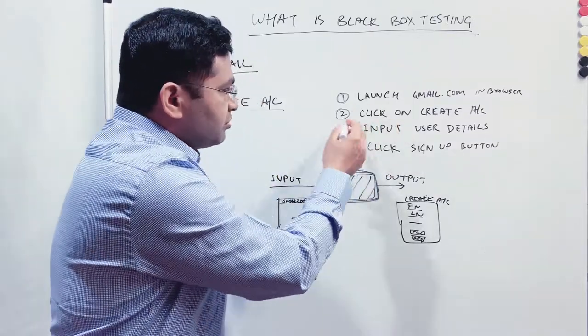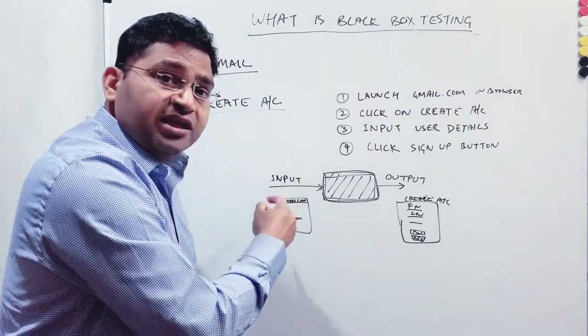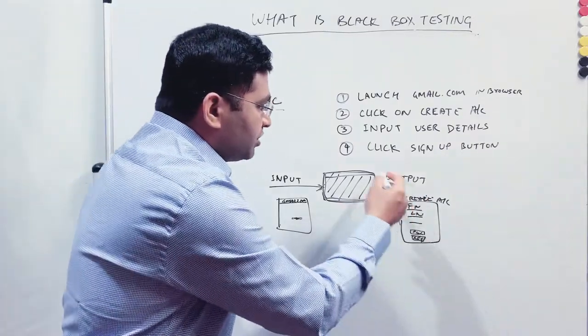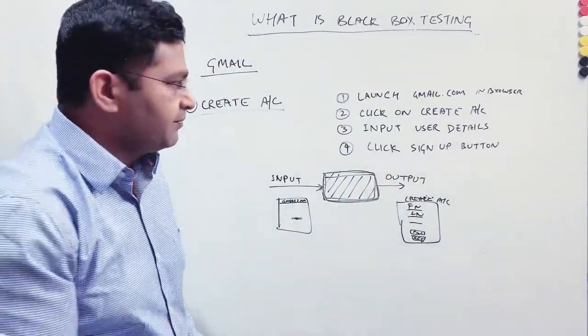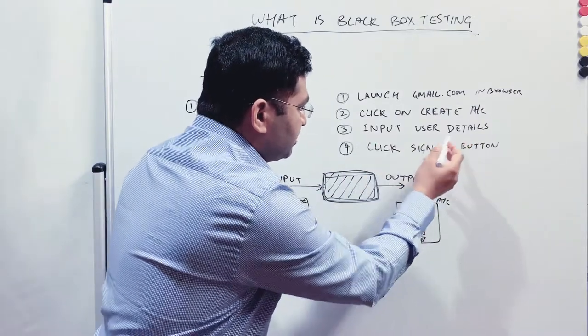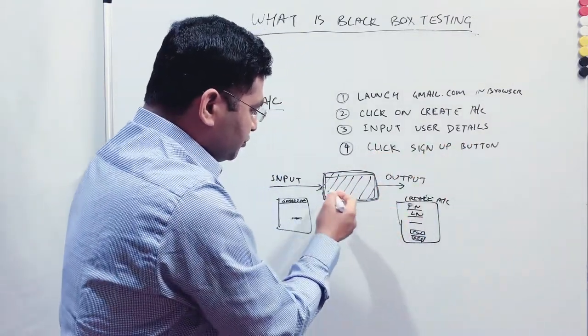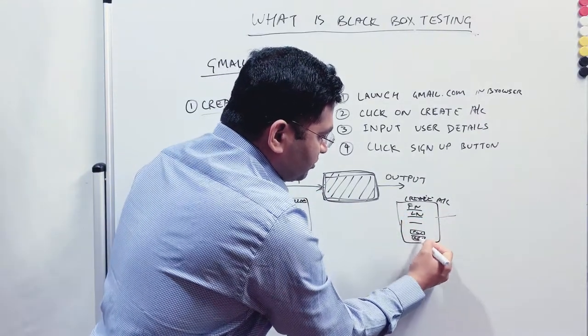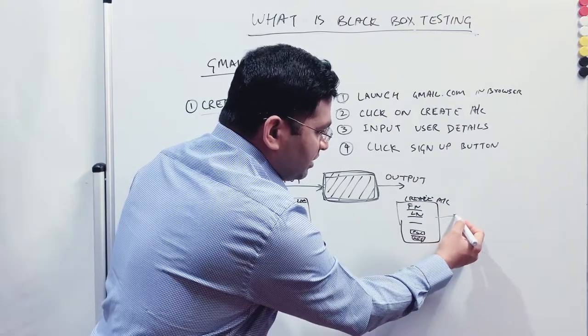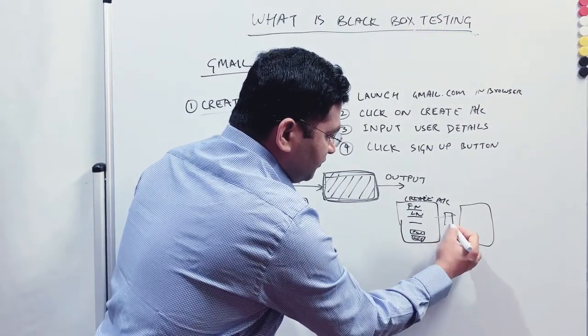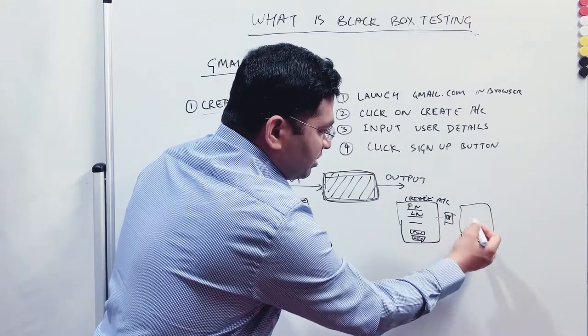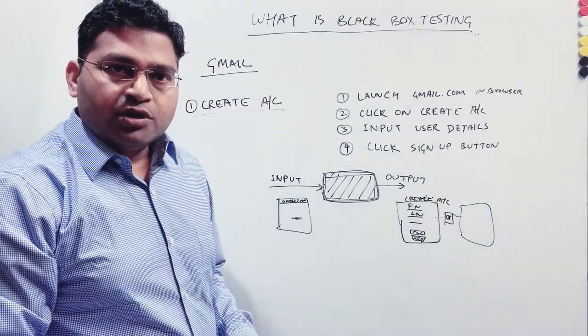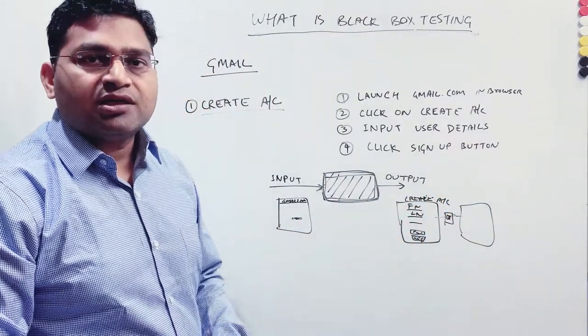So each step in your test case is basically the input and whatever expected result of your test case is, is the output in terms of black box testing. In the third case, I'll provide the input user details and then click on sign up button. So once user details have been provided here, that becomes the input and a user clicks on sign up or register button, and then he should be redirected to, this is the black box in this case, and he should be redirected to the actual Gmail account.